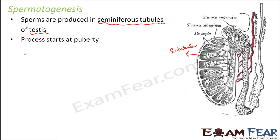The process of spermatogenesis starts at puberty. It is not that sperms are produced inside the testis since birth. This process is initiated only when a male reaches puberty, which is when he enters the reproductive phase. Before that, during the juvenile phase, sperms are not being produced in his body.